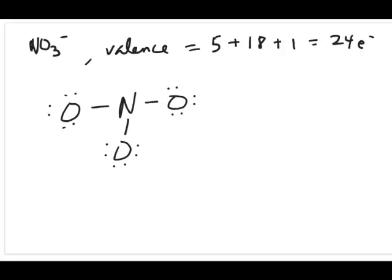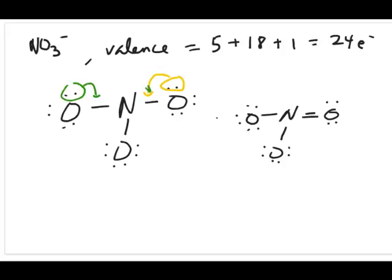Nitrogen does not have an octet, and nitrogen cannot violate the octet rule. So you move a lone pair to form a double bond, giving a structure where everyone satisfies the octet rule. You could also draw other resonance structures by moving different lone pairs, but we'll discuss that shortly. For now, we just have this one structure for the ion and will calculate formal charges.